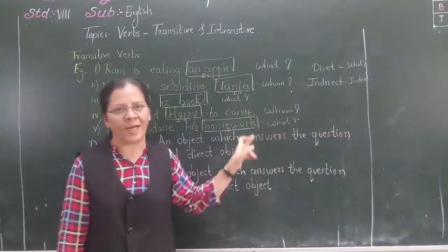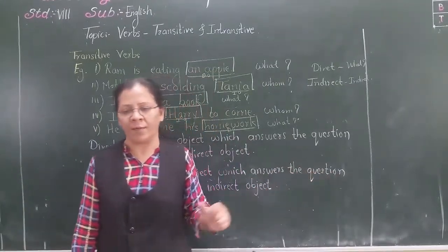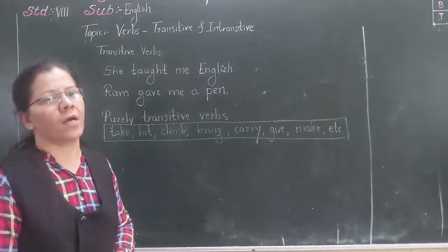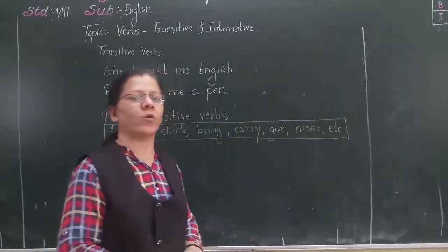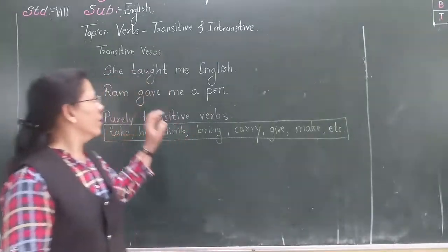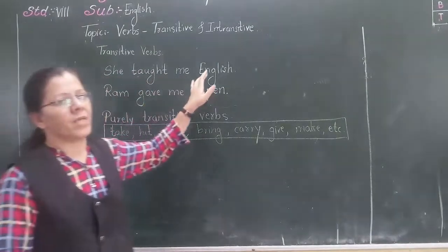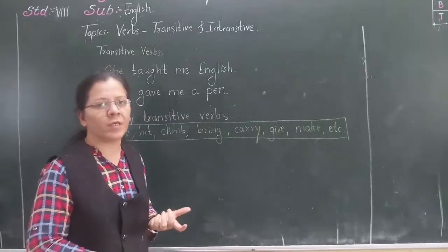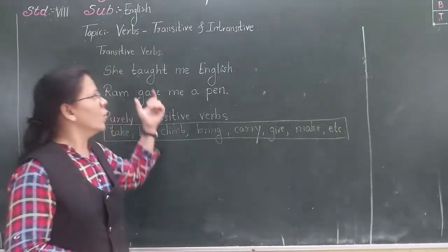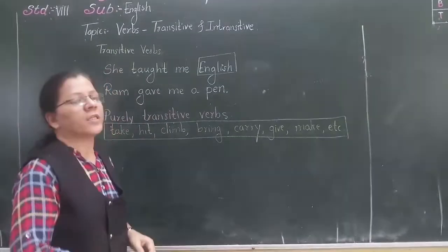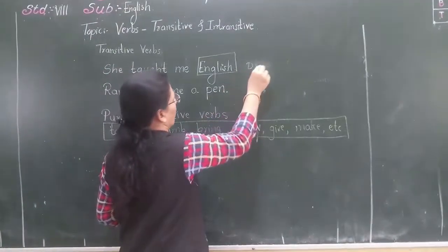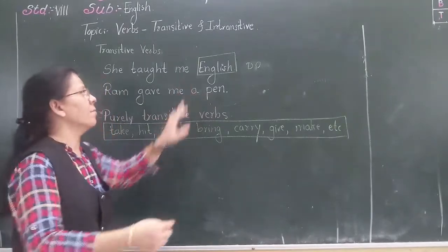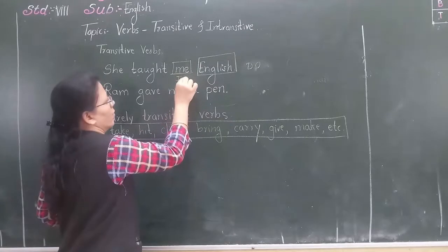Now let us see examples in which there are both direct and indirect objects. In the example 'she taught me English': she taught what? English — English is your direct object. She taught whom? Me — me is your indirect object.